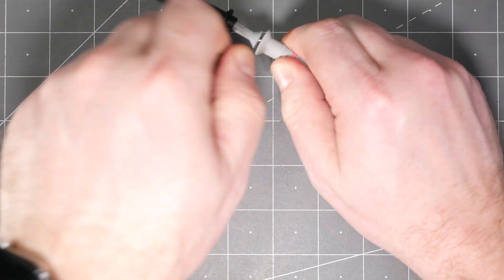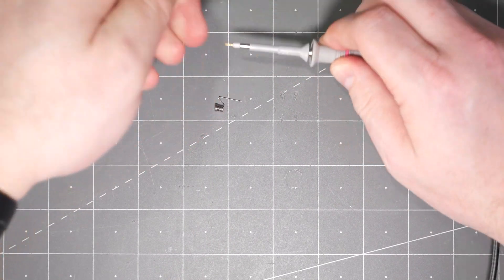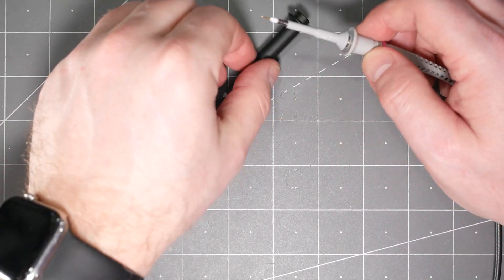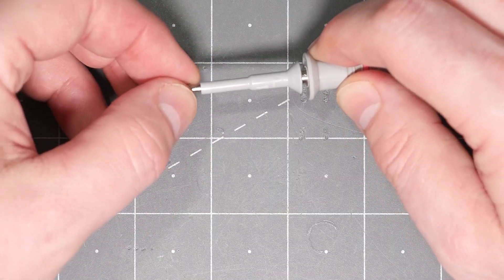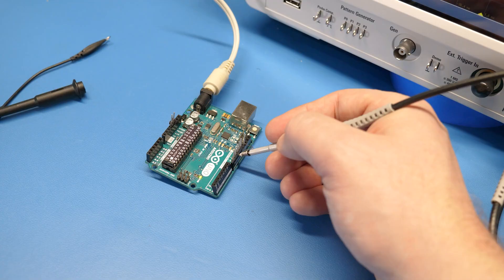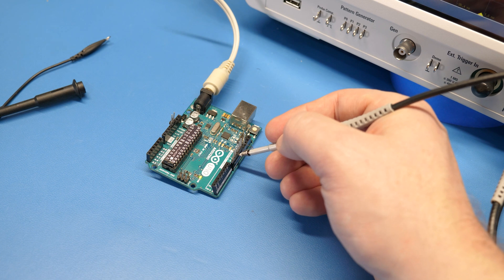To attach it requires a little bit of work. First you need to remove the retractable cap. Then the ground spring slips on to the tip and now we have that really small ground loop. One downside to this accessory is that you have to hold the probe.